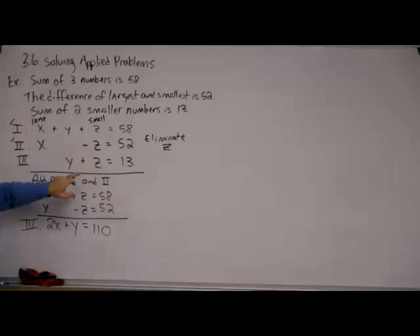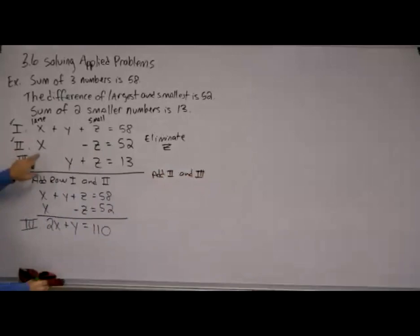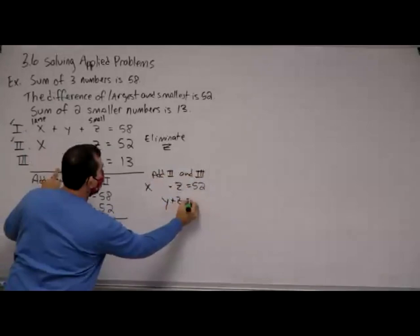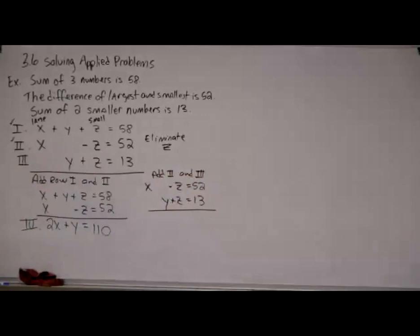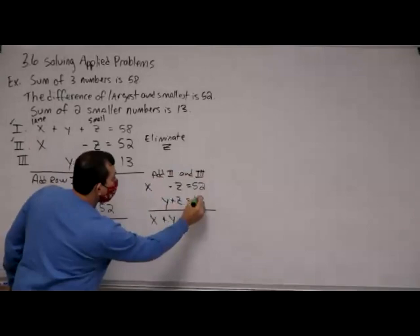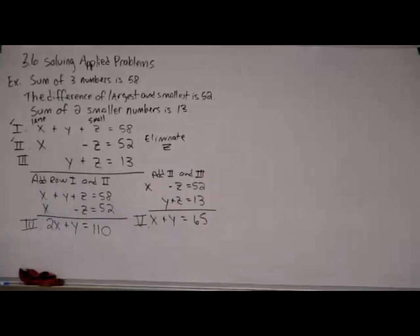Since I used rows one and two to eliminate z the first time, I now have to use row three with one of those rows to eliminate z again. I'll add row two and row three: x minus z equals 52, plus y plus z equals 13. The z's cancel, giving me x plus y equals 65. That is my equation five.